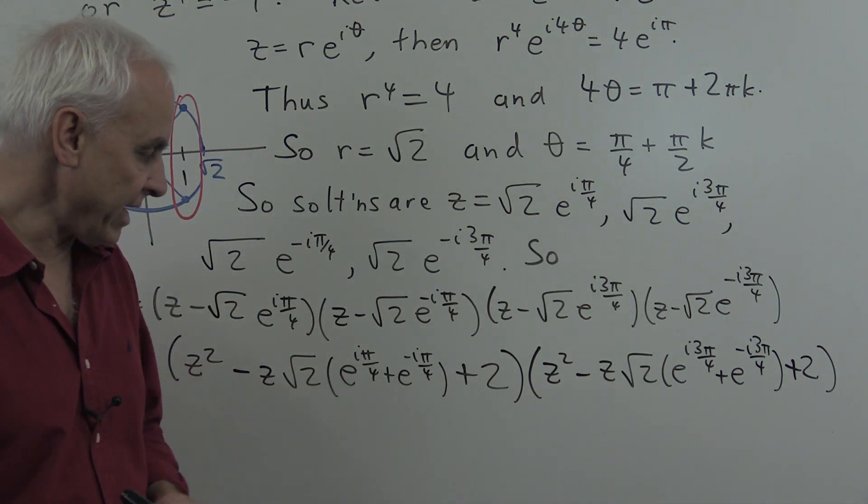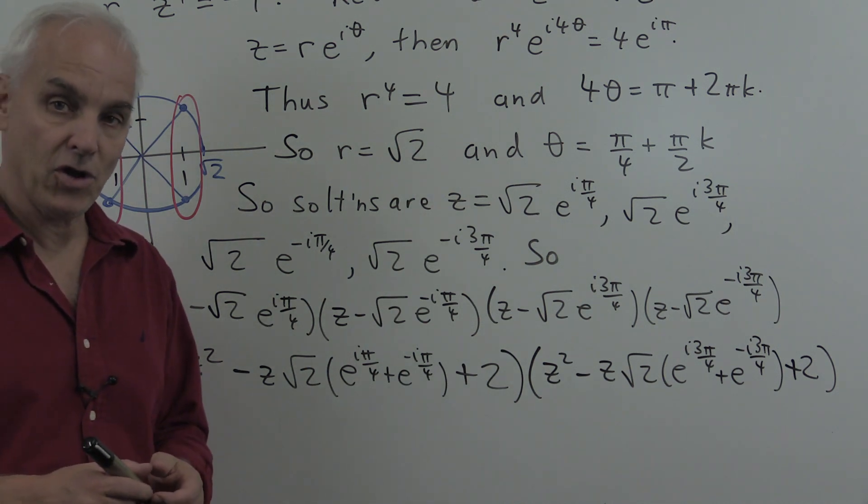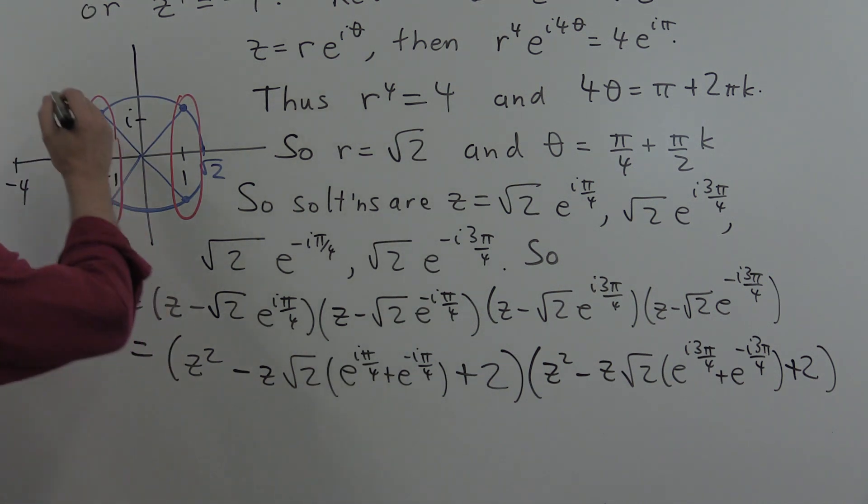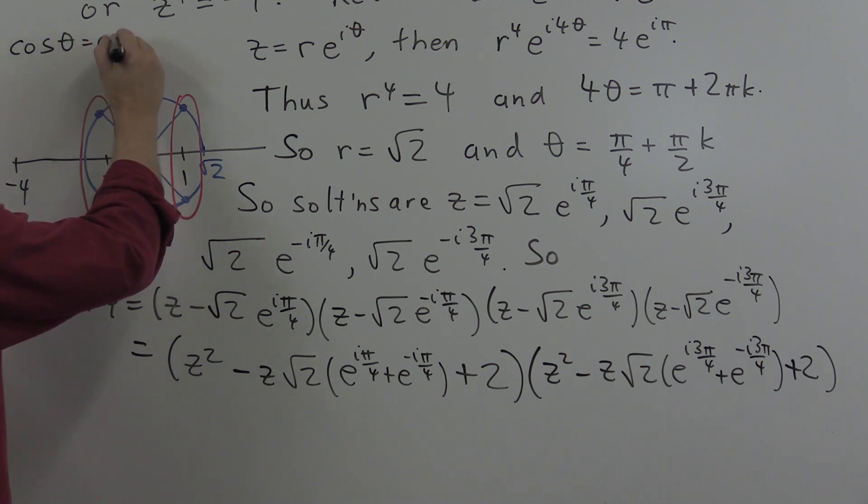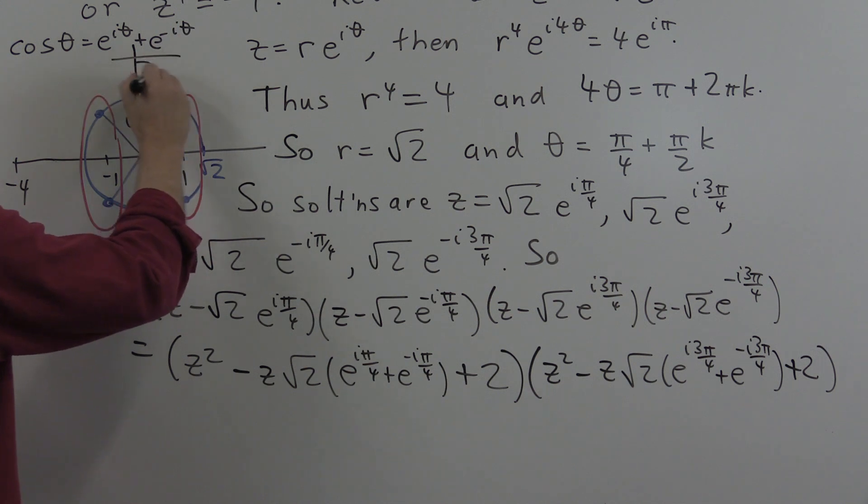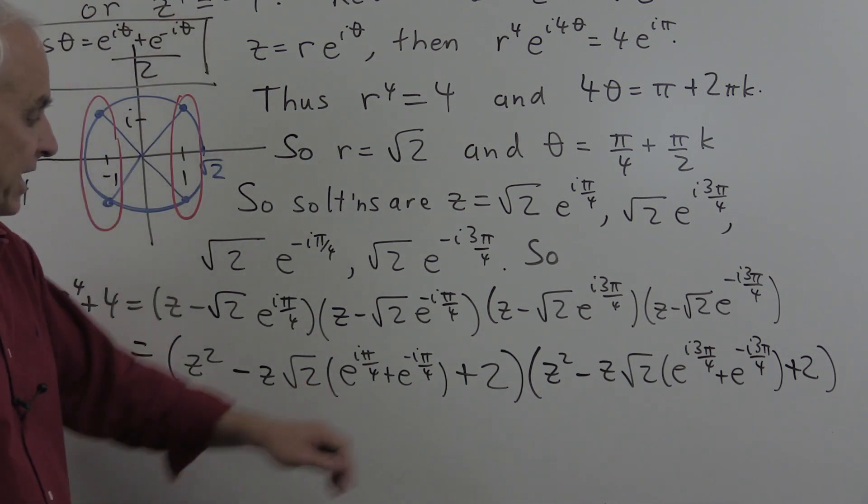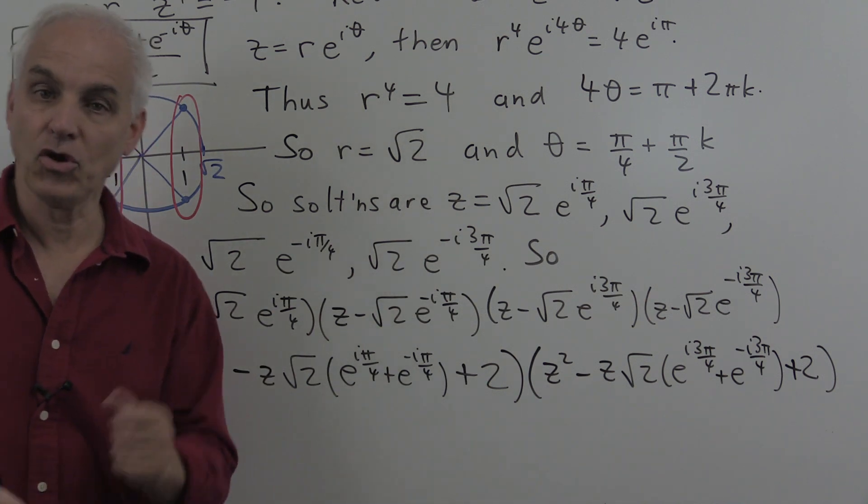All right, what is e to the i pi on 4 plus e to the minus i pi on 4? That's 2 times cosine of pi by 4. All right, so maybe up here I'll remind you that cosine of theta equals e to the i theta plus e to the minus i theta all over 2. All right, so we're using that fact there to replace this thing here with cosine of pi by 4 times 2.